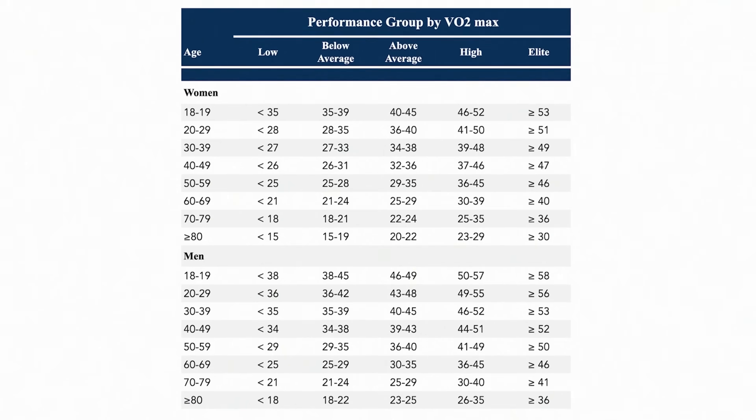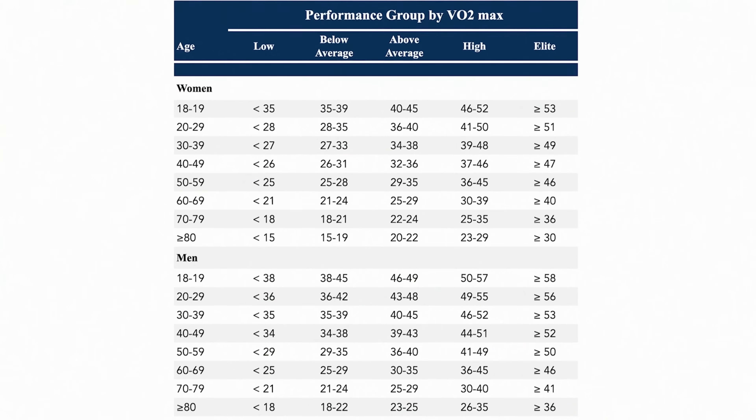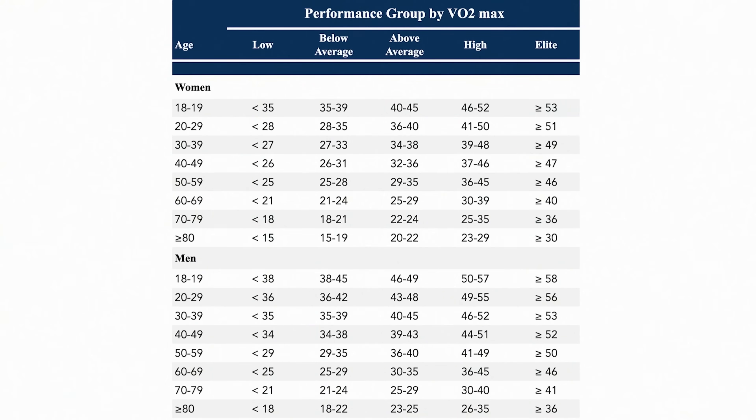When you get into your marginal decade, the low bar is 18 and the high bar is 36 — a 2x difference in VO2 max translating to a 4x difference in mortality. That is huge when the one-year all-cause mortality for an 85-year-old is more than 10%.